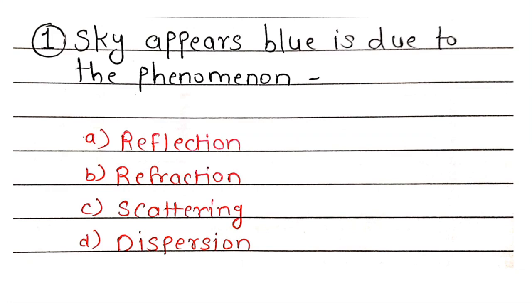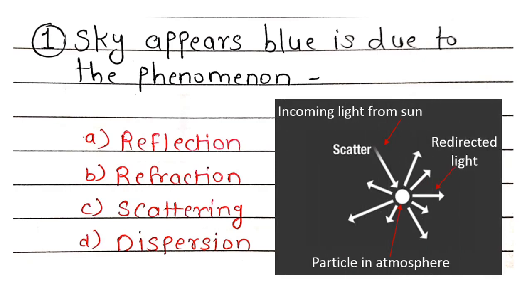First question: Sky appears blue. It is due to the phenomena. Correct answer, Option C, Scattering. Diyusa akash nilay dishte. Suriyoday kiwa surya stacha veli akash lal dishte. He sarvoprakar scattering of light manjej prakashach vikhurne ya mulay ho te.